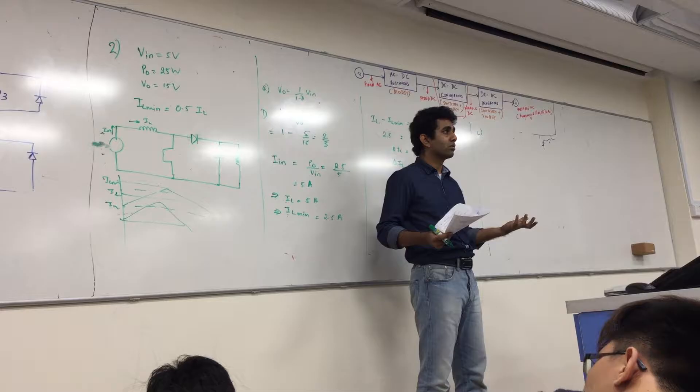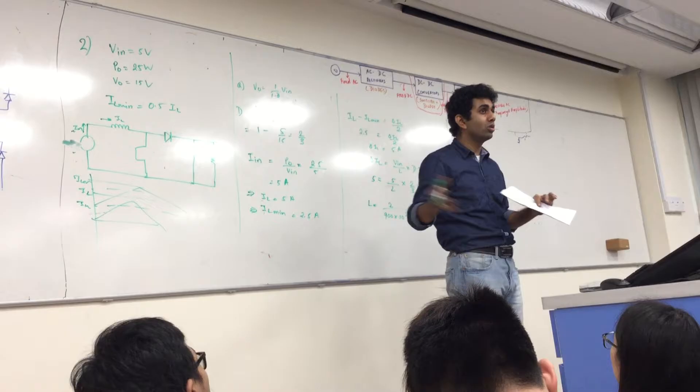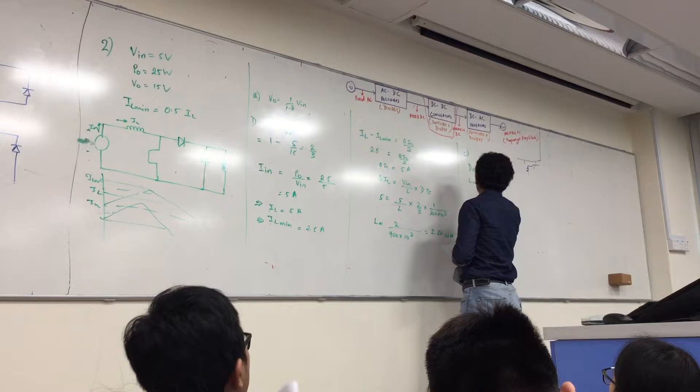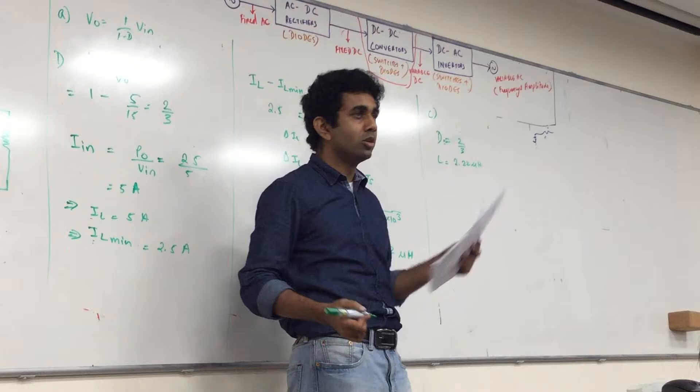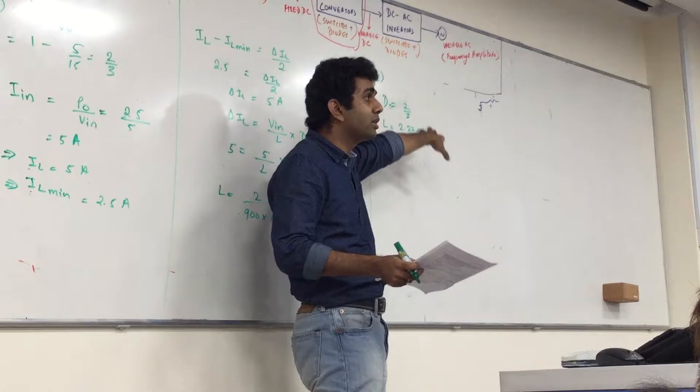Now assume that the output load power is reduced. Determine the corresponding output power at which the converter operates at the boundary between CCM and DCM with inductance maintained at this value. Ok, which means I am at the boundary condition now. This current has become something like this now. Am I told anything else about the duty cycle? No, right. I am not told that the duty cycle is reducing or increasing or remains the same, which means I can assume it remains the same.